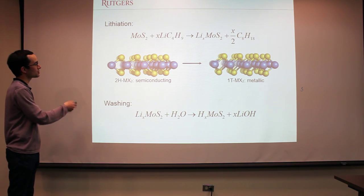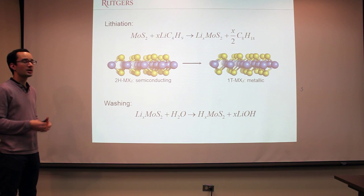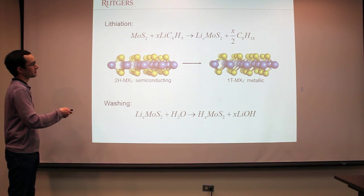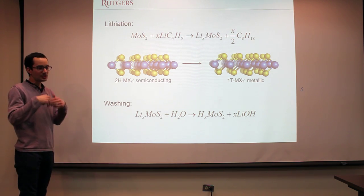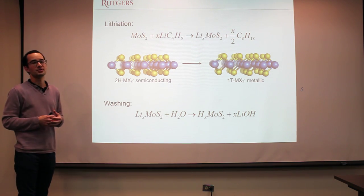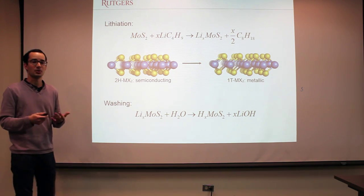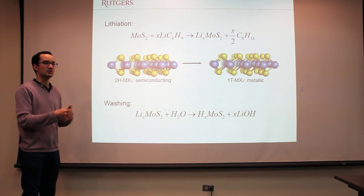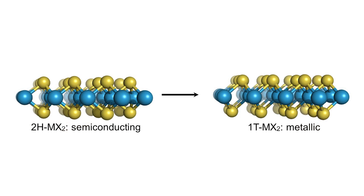2H means that the coordination of the transition metal — the molybdenum atoms — is trigonal prismatic coordination. As we reduce the material using the butyllithium, we increase the density of electrons on the d-orbital, and that will favor the 1T phase of MoS2, which is known to be metallic. This 1T phase corresponds to octahedral coordination for the transition metal.